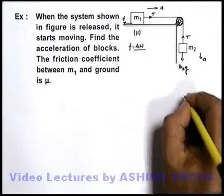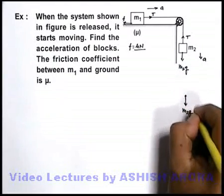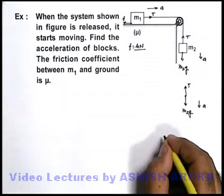If we just draw the free body diagram of the blocks, we can write for this m2 in downward direction, it is m2g. In upward direction it is T and it is coming down with acceleration a.